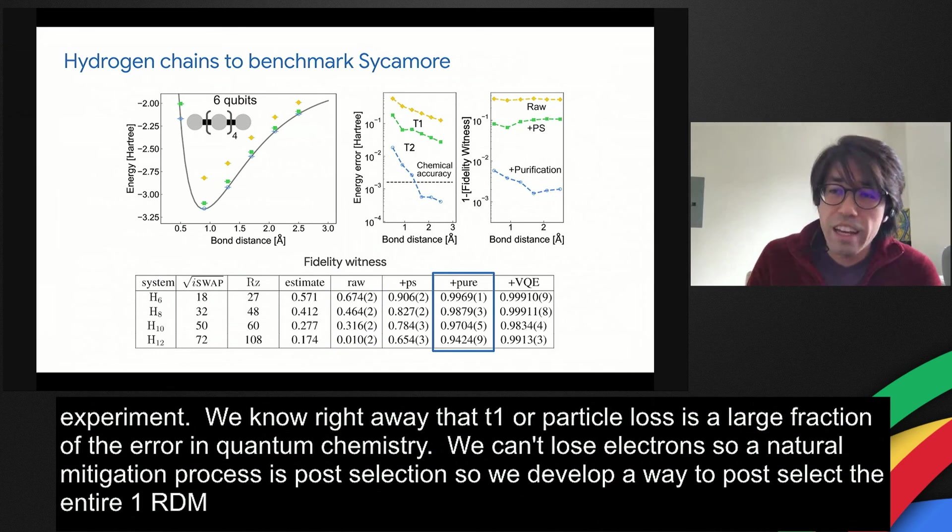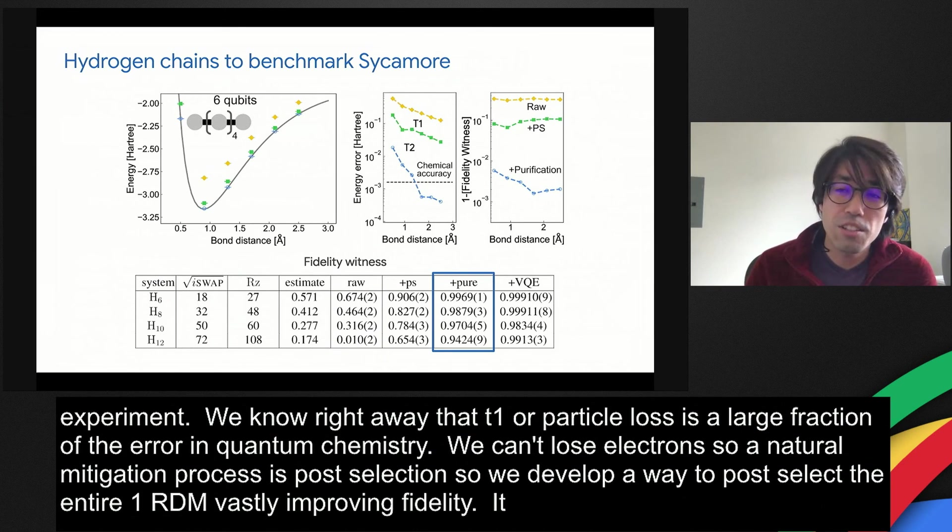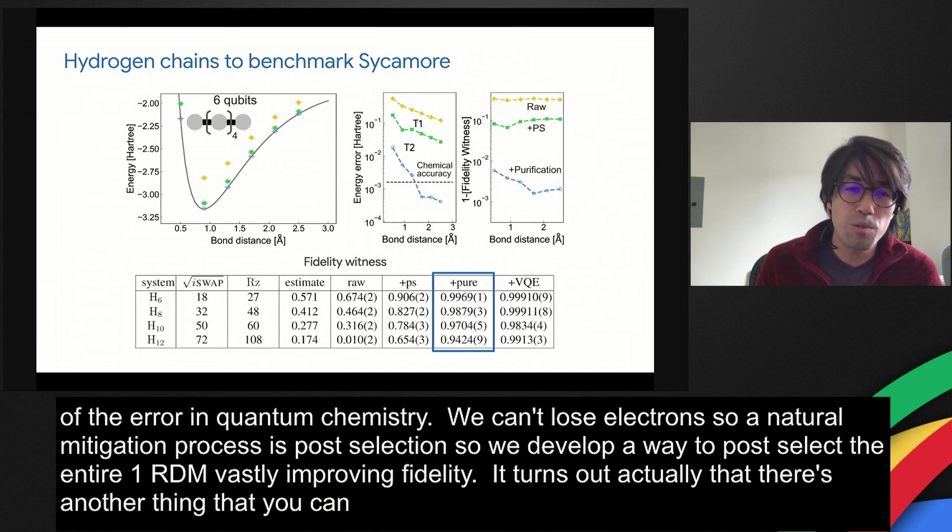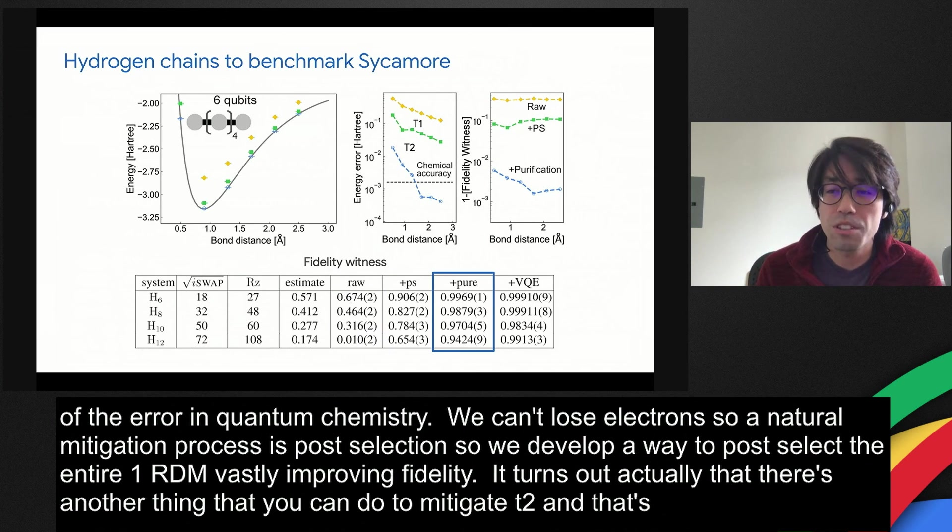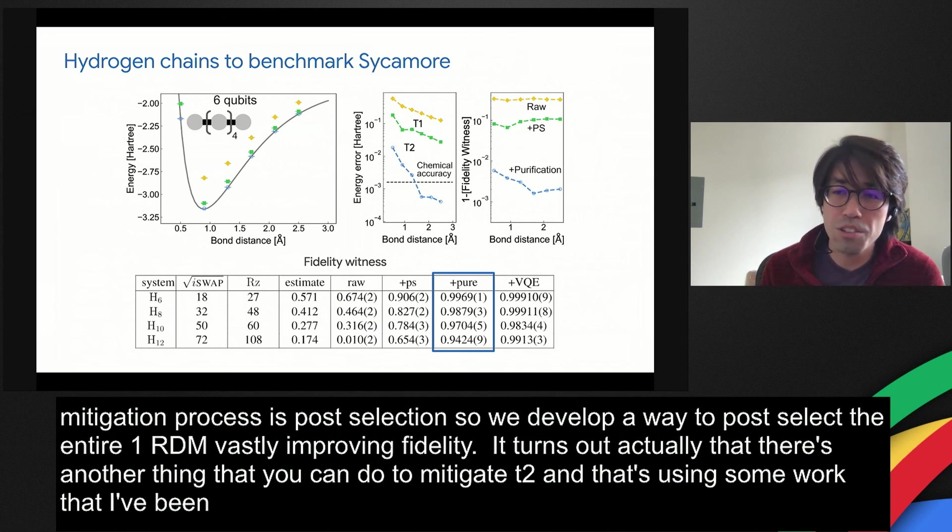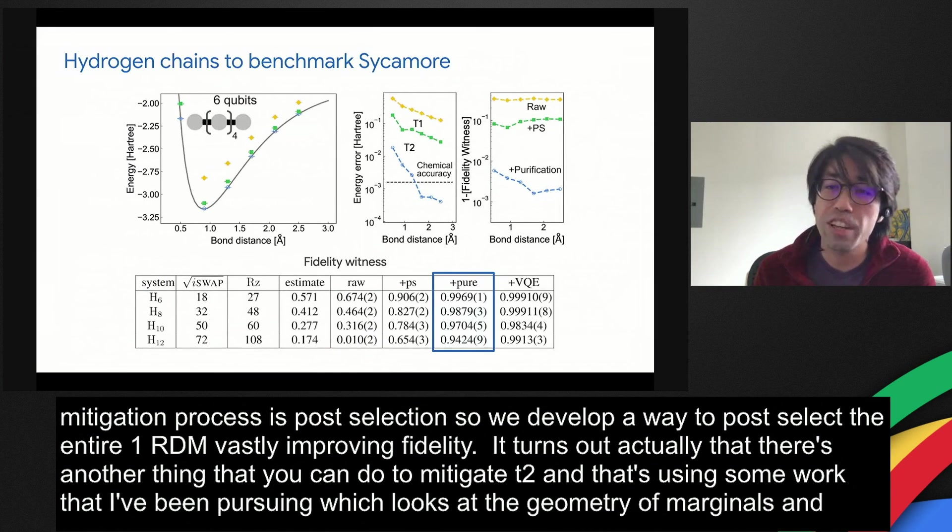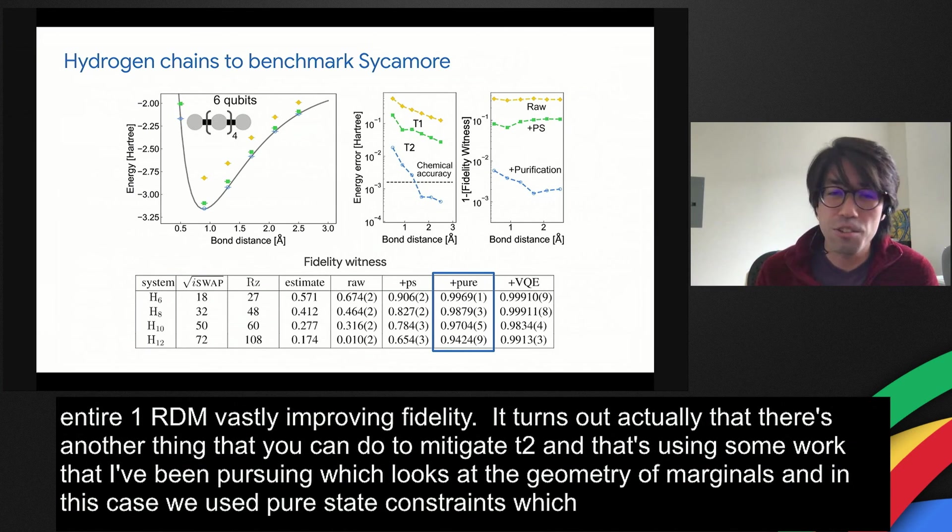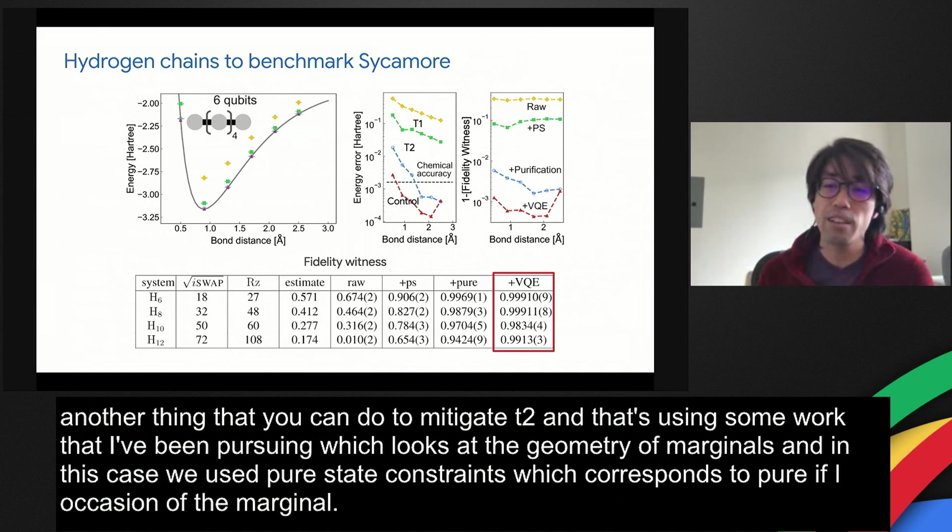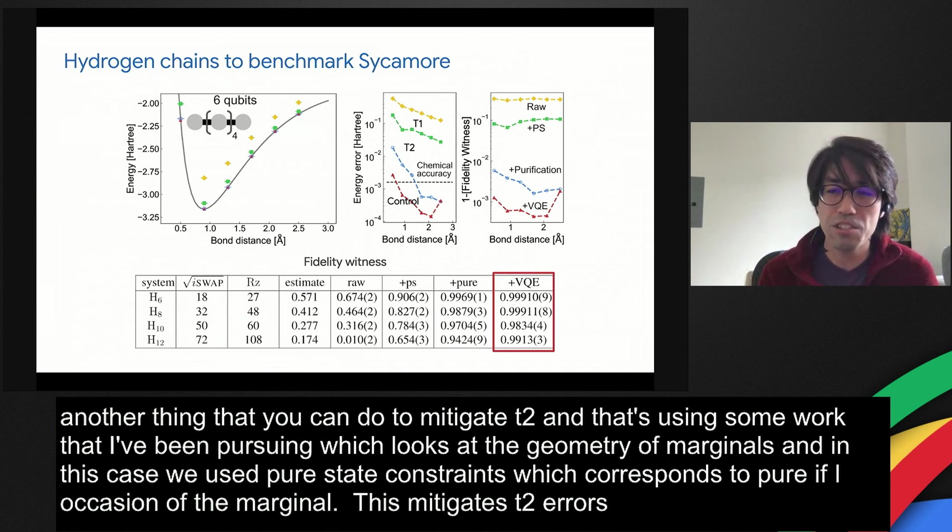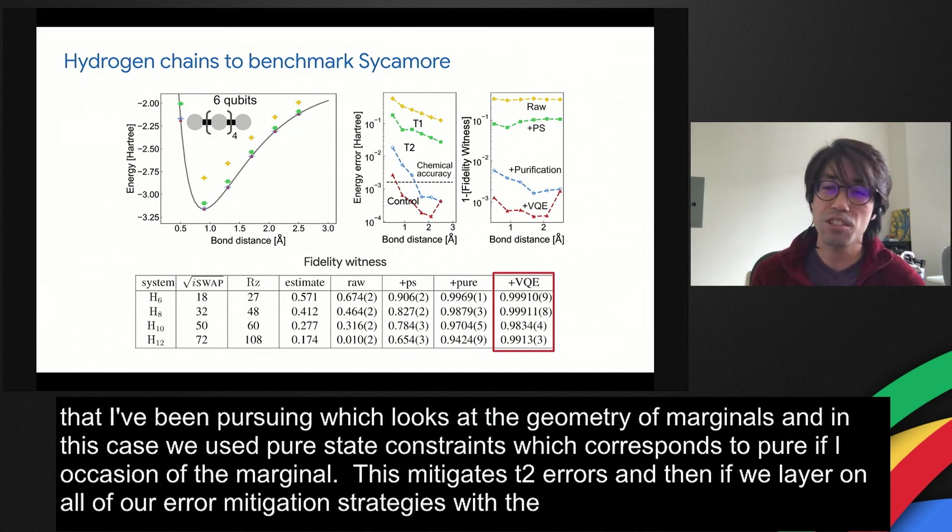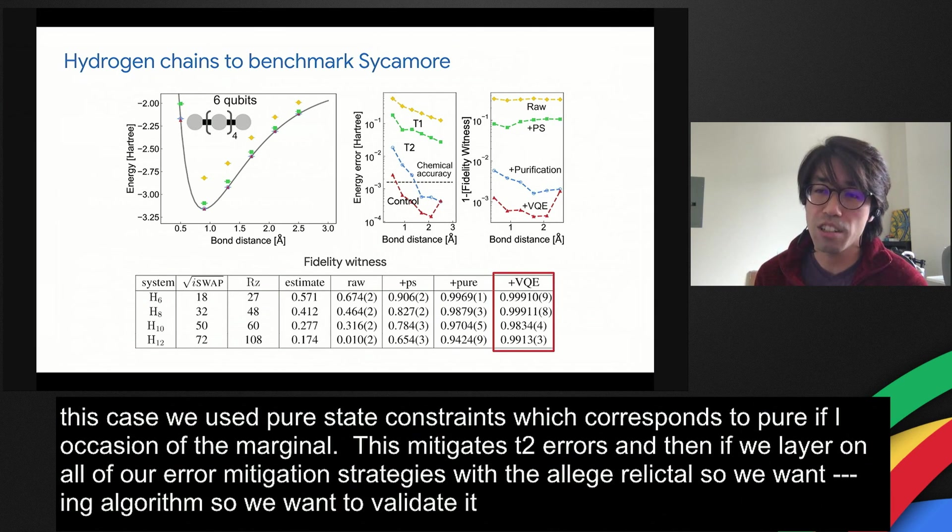It turns out actually that there's another thing you can do to mitigate T2, and that's using some work that I've been pursuing, which looks at the geometry of fermionic marginals. In this case, we use pure state constraints, which corresponds to purification of the marginal. You can show that this actually mitigates T2 errors. Finally, if we layer on all of our error mitigation strategies with the VQE algorithm, so we want to validate that variational relaxation does work at this scale, we see about another order of magnitude reduction in error.